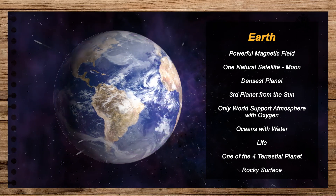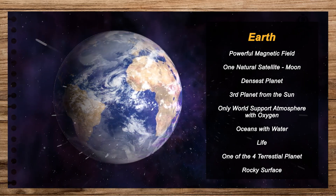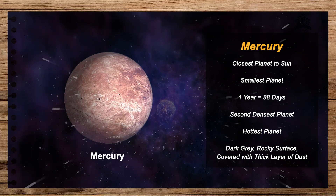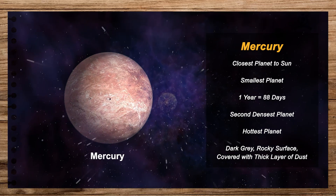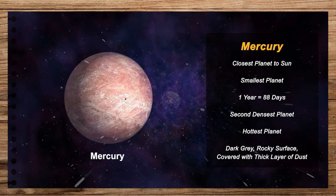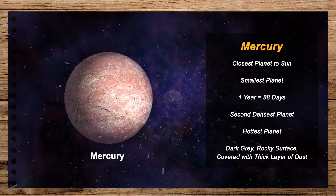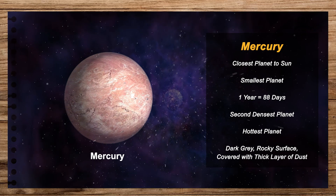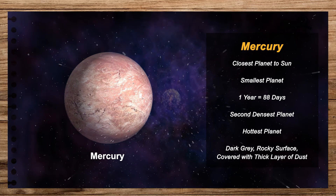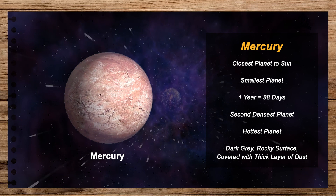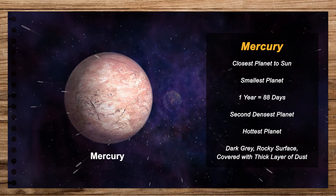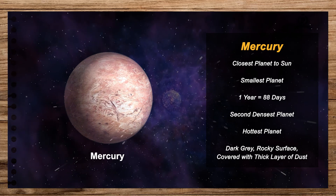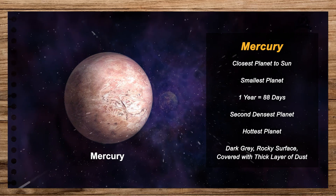Mercury is named after the messenger of Roman gods. It is closest to the Sun. There is a great difference between the day temperature, which is about 400 degrees Celsius, and the night temperature, which is about minus 170 degrees Celsius. Mercury has no moon.